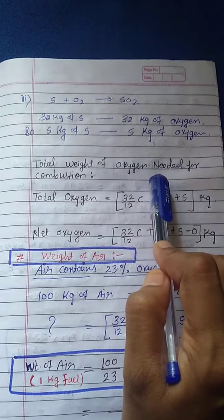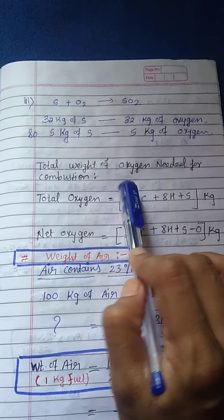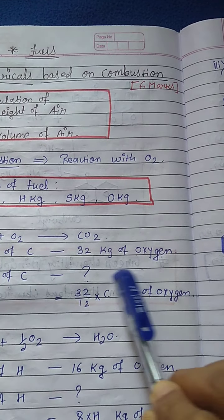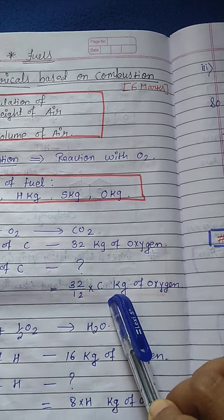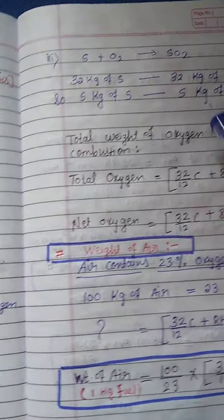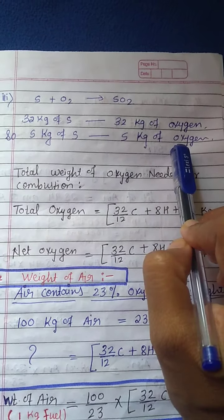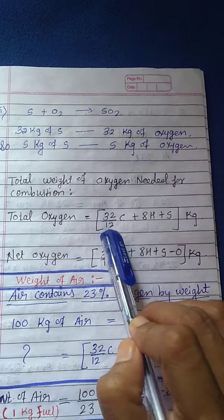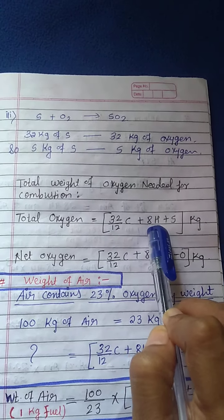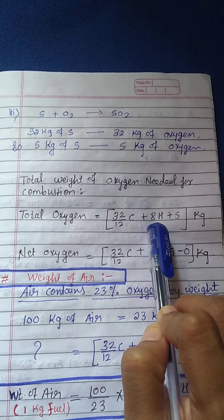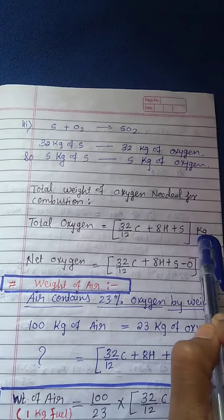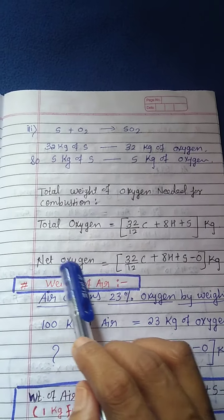Now we will calculate total weight of oxygen needed for combustion. For carbon: 32/12 × C kg of oxygen. For hydrogen: 8H kg of oxygen. For sulfur: S kg of oxygen. So total oxygen = (32/12 × C + 8H + S) kg. This is the total oxygen needed.